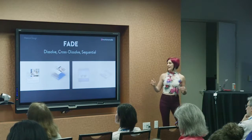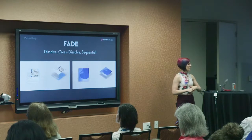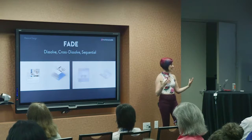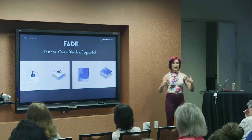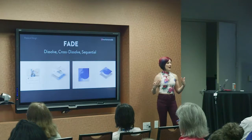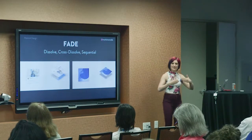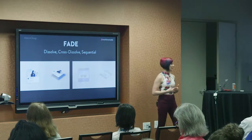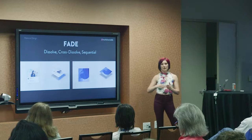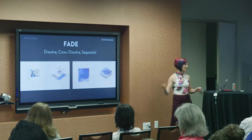Then there's fading. There are several different kinds. You might see a dissolve — a standard fade where something fades out and then something fades in. A cross-dissolve is where they're simultaneously fading — one object fading out while another fades in, so if you paused it in the middle, you'd see both of them a little bit. And there's also a fast sequential fade — a really quick fade out and really quick fade in. Those are just different kinds of fades you can employ.